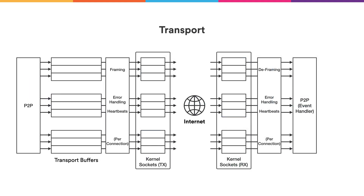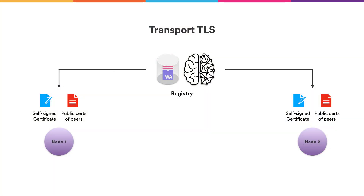Below the gossip component there is a transport component that maintains actual network connections between peers. Transport is responsible for keeping connections stable, has its own send buffers for transient connectivity problems and congestion, and has an internal heartbeat mechanism to ensure connections do not hang — important for bounded time delivery. Transport frames gossip messages with its own layer 7 header containing metadata fields for maintaining flows and reporting errors. Currently, transport uses multiple TCP streams between peers, and we are investigating a potential switch to QUIC in the future. Transport uses TLS 1.3 adapted for a decentralized peer-to-peer network with no certificate authority hierarchy; instead, the root of trust is the registry that provides self-signed certificates for nodes.